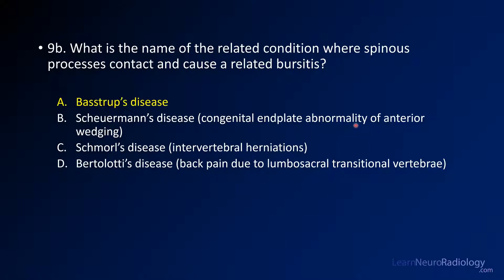Scheuermann disease is congenital Schmorl's nodes and wedging of the anterior vertebral bodies. Schmorl's nodes are intervertebral disc herniations into the vertebral endplate. Bertolotti disease is when you have back pain due to a transitional vertebra of the lumbar spine.